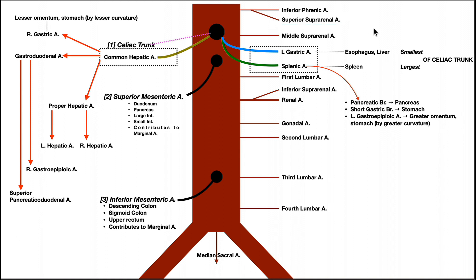Coming off of the inferior phrenic artery is the superior suprarenal artery. The suprarenal gland, also called the adrenal gland, has three arteries on each side supplying it — six total. That tells you how important the adrenal gland is for the sympathetic and endocrine responses. The superior suprarenal artery branches from the inferior phrenic.